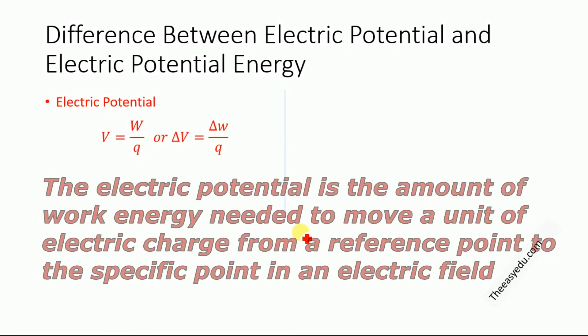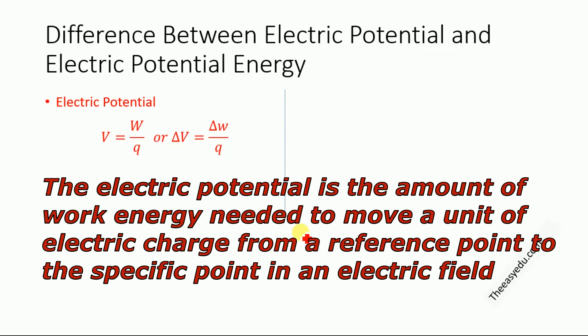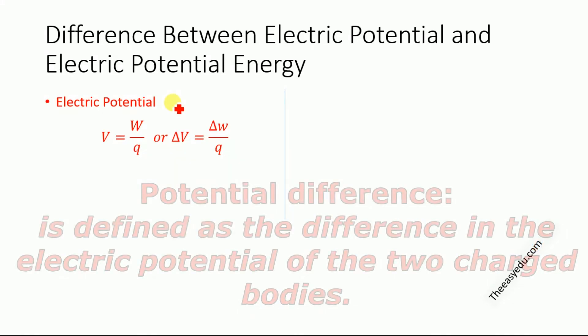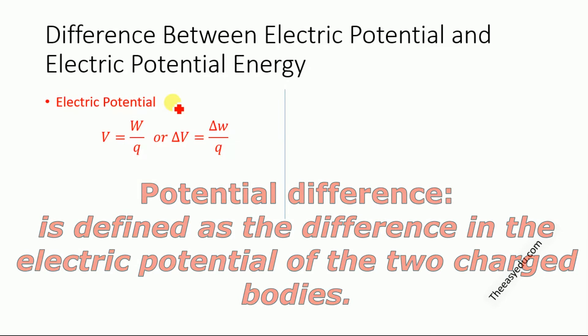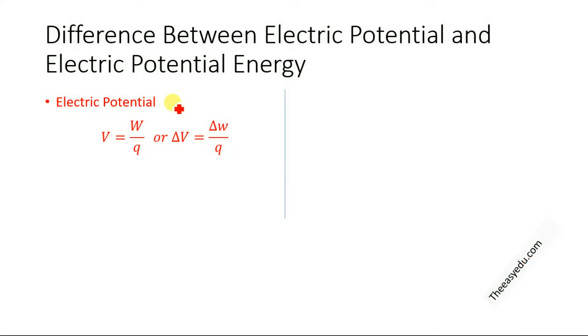Electric potential is the amount of work done per unit positive test charge to bring a unit positive test charge from infinity to a specific point in an electric field — this is known as the electric potential. There is also a related term called electric potential difference. Electric potential and electric potential difference are similar, but when we move a positive charge inside an electric field from one point to another, that is the potential difference. If we move the positive test charge from infinity to a specific point in an electric field, that is the electric potential.